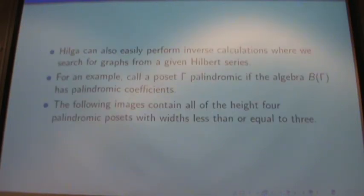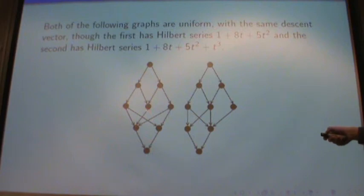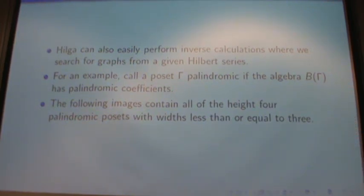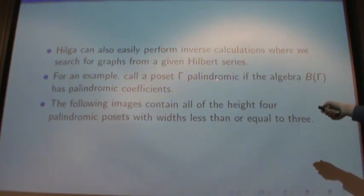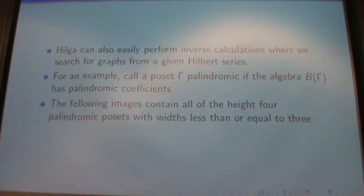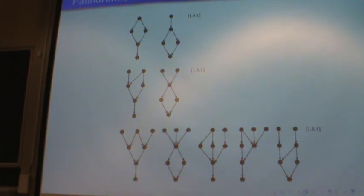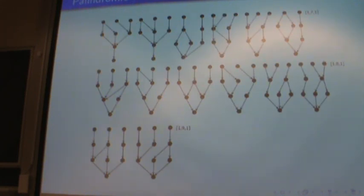And if anyone's wondering, it's not just because this is not causal and this is. Because you can look for causal examples, counterexamples, and non-causal counterexamples, and they have them as well. And I'm just going to end with a pretty picture because I always like to end with a pretty picture. So unrelated pretty picture, unrelated to the result, but related to Hilga. But call a poset palindromic if the algebra B gamma has palindromic coefficients. So the coefficients of the Hilbert series are palindrome. And search for, you know, put some limits on our search so we don't fill the slide with 1,000 examples. And here are the examples of height 4, width 3, with palindromic Hilbert series. And those are all of them. Thank you very much.